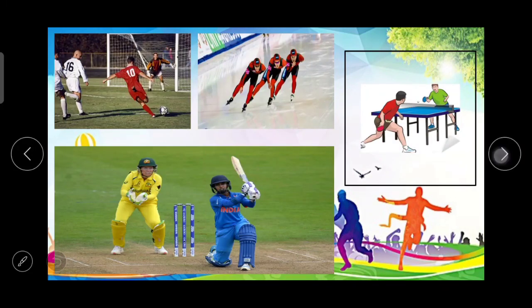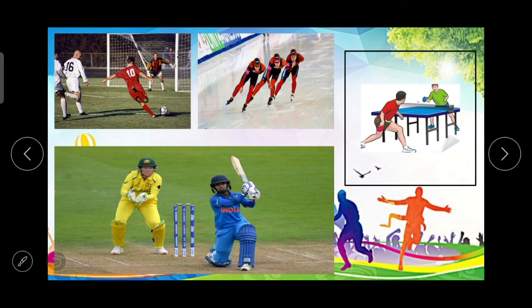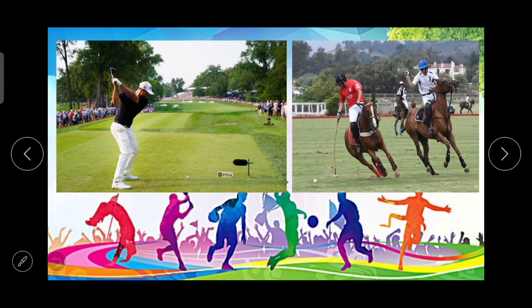When we talk about international games, they include badminton, table tennis, hockey, cricket, football, golf, and polo. All these are the types of outdoor games in the international sports category.